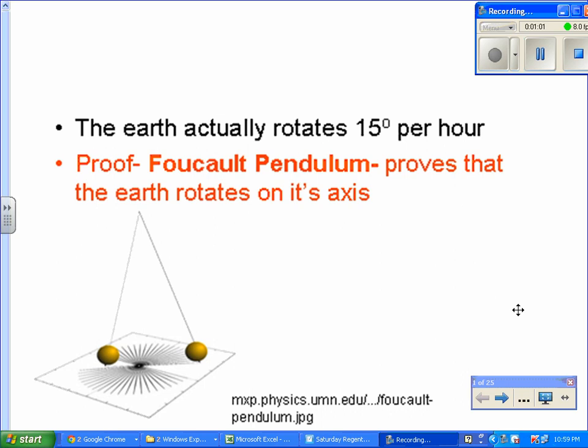The Foucault Pendulum essentially proves that the Earth rotates on its axis. Now, the Earth actually rotates 15 degrees per hour. Remember, the Earth rotates 15 degrees per hour. That's something you should look out for.